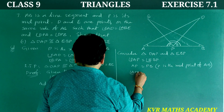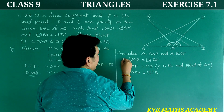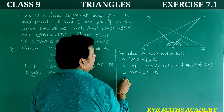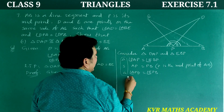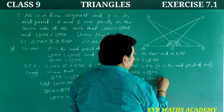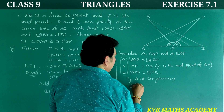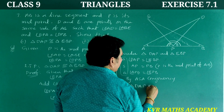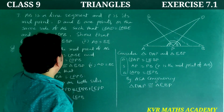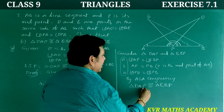Angle APD is equal to angle EPB (proved above). By ASA congruency, triangle DAP is congruent to triangle EBP. Hence proved, part one.